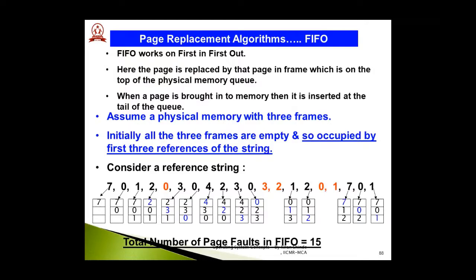The first algorithm is First In First Out (FIFO). This algorithm works on a first-in-first-out basis. The page replaced is the one at the top of the physical memory queue, and when a new page is brought into memory, it is inserted at the tail of the queue.